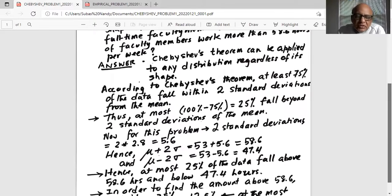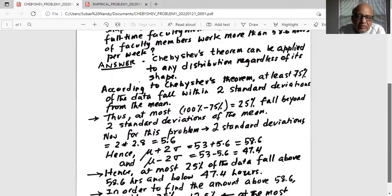For this problem, two standard deviations is 2 multiplied by standard deviation 2.8, which is 5.6. So, we find that two limits: μ + 2σ is 53 + 5.6 equals 58.6, and μ - 2σ is 53 - 5.6, which is 47.4.